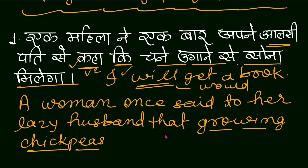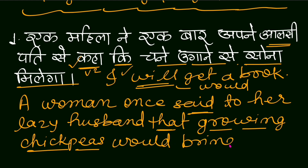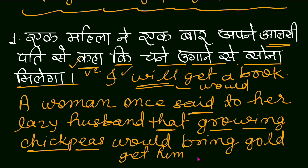Here, 'that' (कि) is used, and 'growing chickpeas' is the subject. Will should be used, but since there is past tense before 'that,' we use 'would.' So: 'would bring gold' — or you can also write 'would get him gold.' Full sentence: 'A woman once said to her lazy husband that growing chickpeas would bring gold' — or 'would get him gold.'